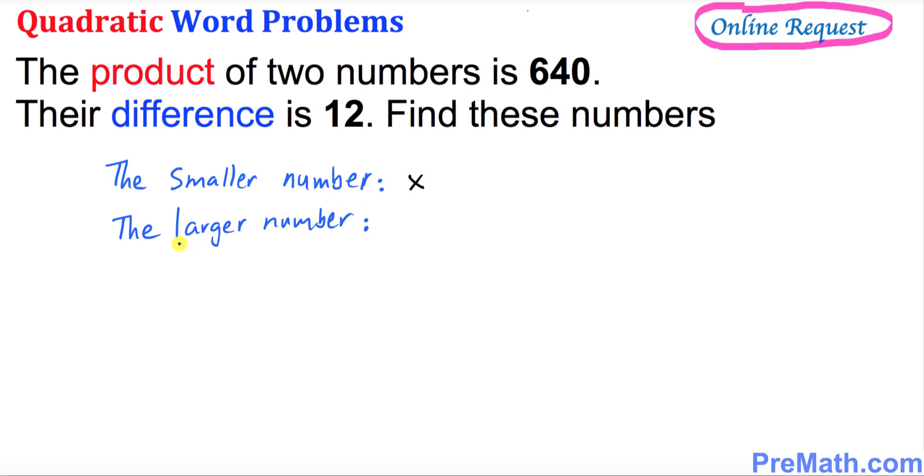And then the larger number—we know their difference is 12. That means the larger number is going to be 12 more, isn't it? So the other number is going to be x plus 12.